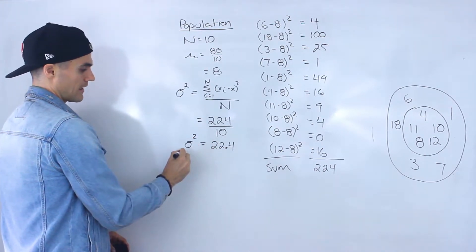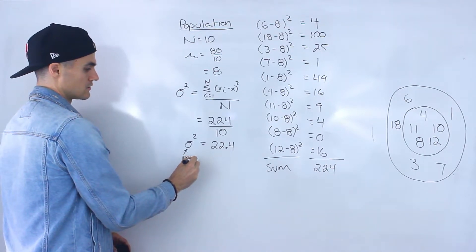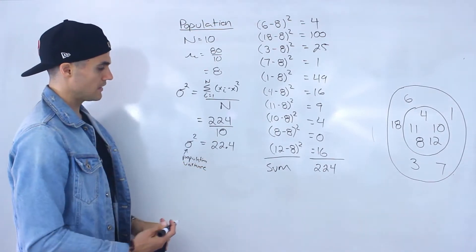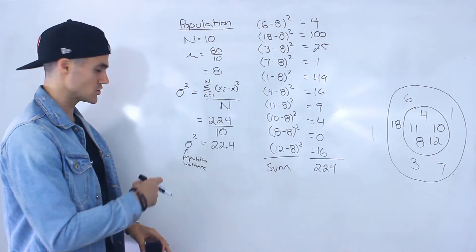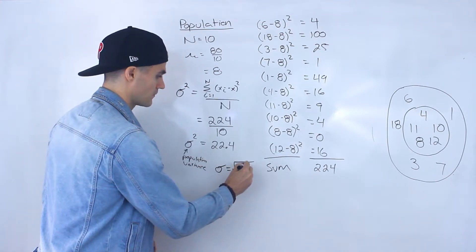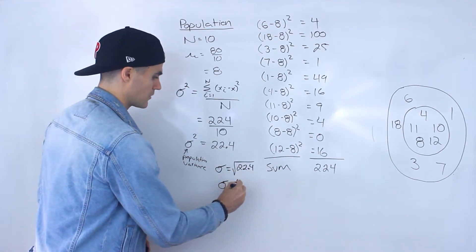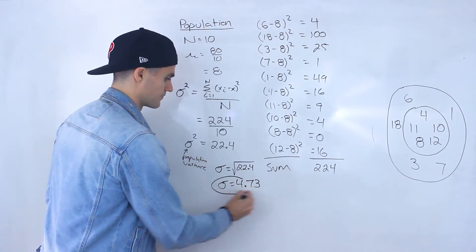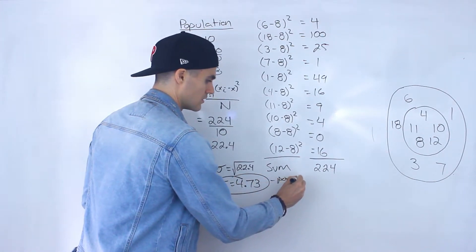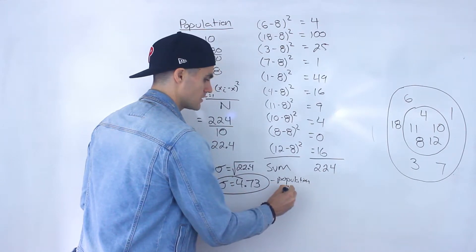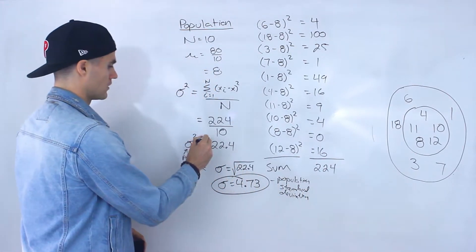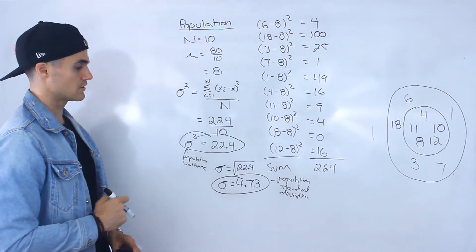So 22.4 is your population variance. To get the population standard deviation, we take the square root of that variance. When you do that on your calculator, you get approximately 4.73. So 4.73 is the population standard deviation, and 22.4 is the population variance.